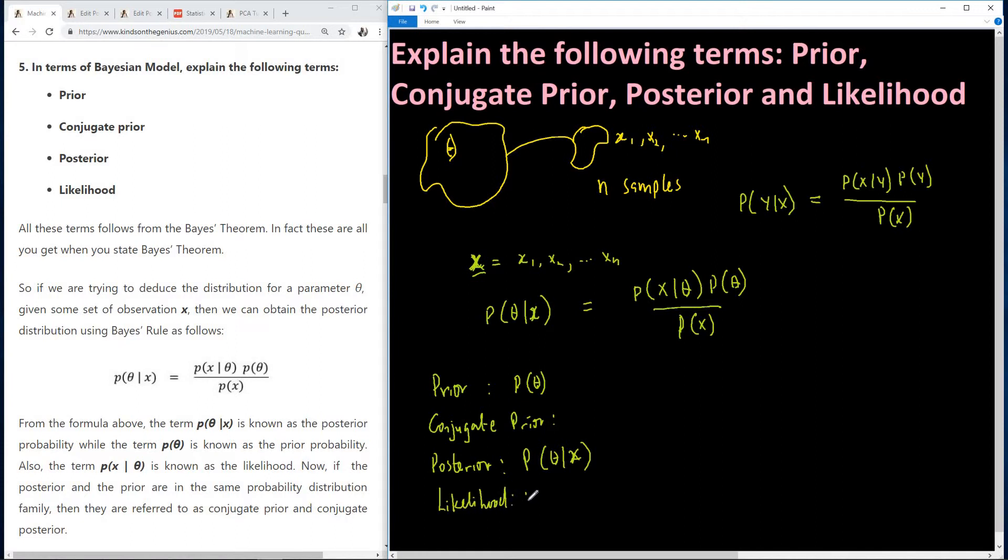So the likelihood is simply P of x given theta. So this is the likelihood term.